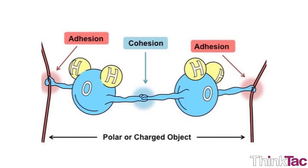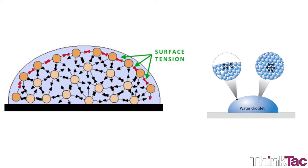Cohesion means attaching the same substance together, so in this case the water molecules in the case of plants. Adhesion means attaching different substances together, so the water molecule and the inner side of the root surface or stem in the case of plants. And surface tension is the intermolecular attraction that forms a thin outer layer of water.